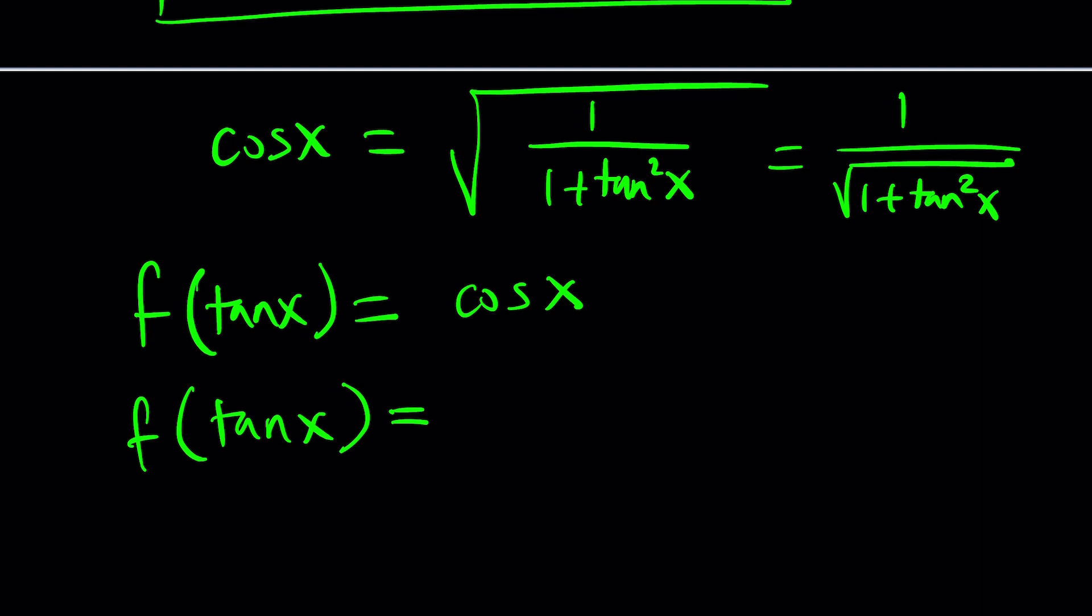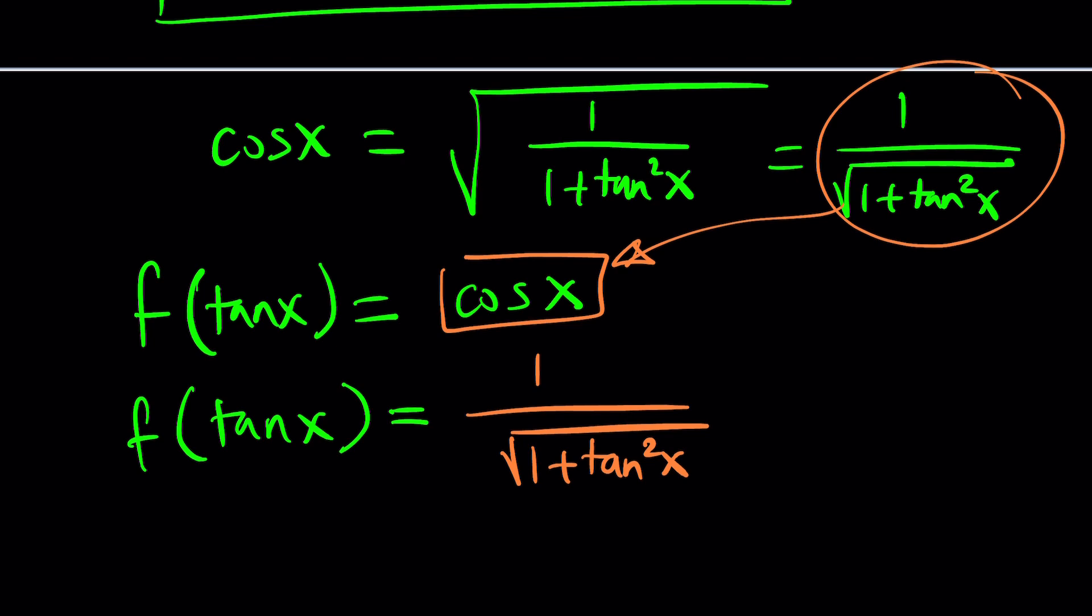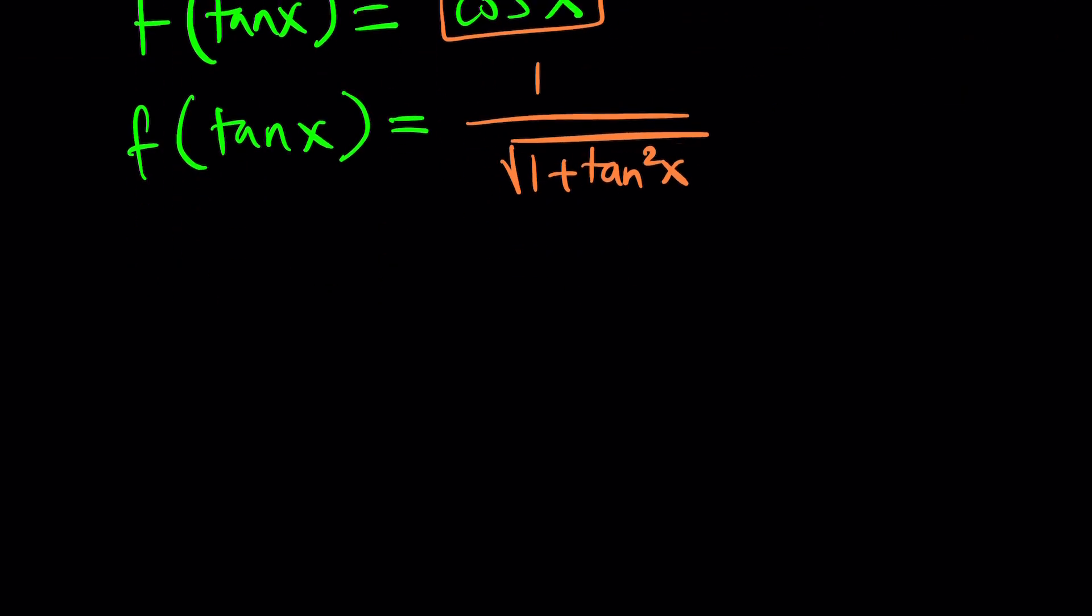Now, I'm going to replace cosine x with this because it is cosine x. You see that? Okay, great. So now let's go ahead and replace cosine with 1 over square root of 1 plus tangent squared of x. And now, you have a direct relationship. Do you see what I'm talking about?